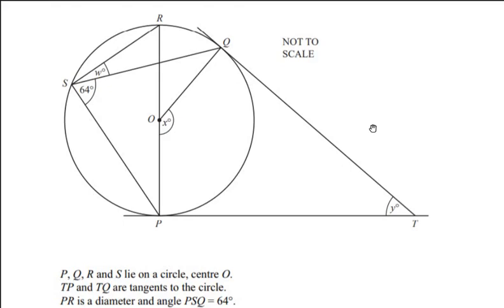Welcome, or welcome back to my channel. In this video we are going to solve an example on circle theorems. PQRS lie on a circle with center O, so the four points P, Q, R, and S are lying on the circle and the center is at point O. TP and TQ are the tangents to the circle, because they touch the circle at only one point.